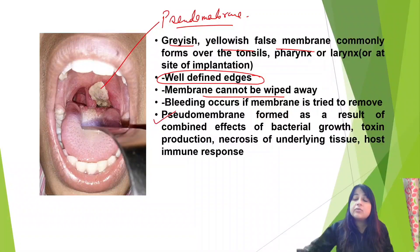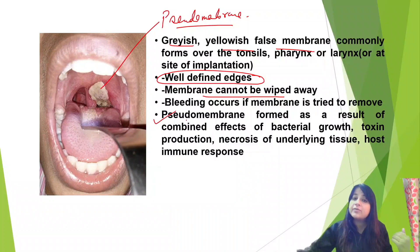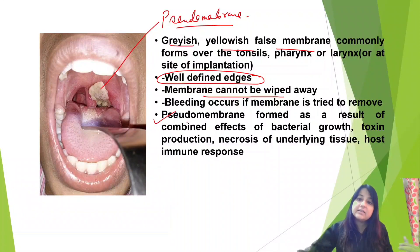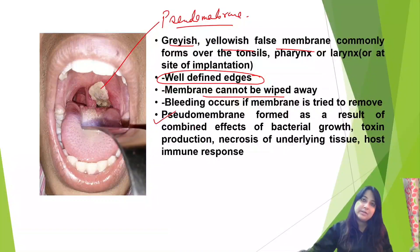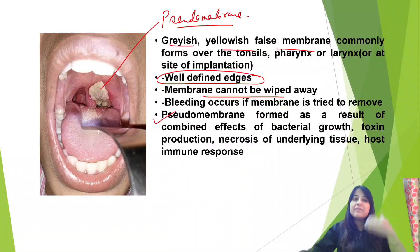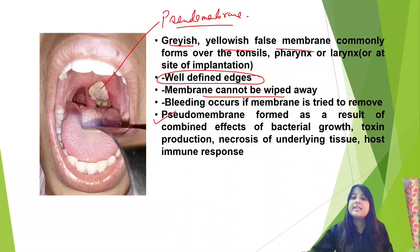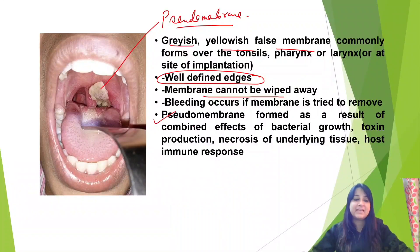A potential MCQ: why does the pseudomembrane form? It forms as a result of the combined effect of the growth of the bacteria, the toxin produced, necrosis of the underlying tissue, and the host immune response. Remember: never try to wipe or remove this membrane, otherwise there will be bleeding.